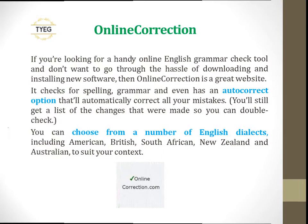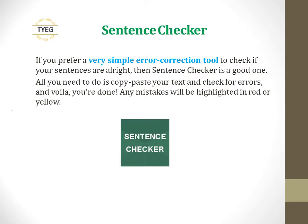Sentence Checker. If you prefer a very simple error correction tool to check if your sentences are alright, then Sentence Checker is a good one. All you need to do is copy-paste your text and check for errors, and voila, you're done. Any mistakes will be highlighted in red or yellow.